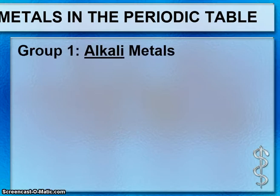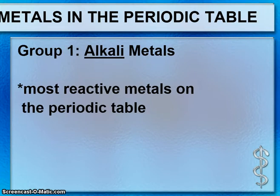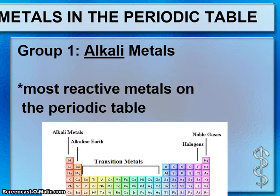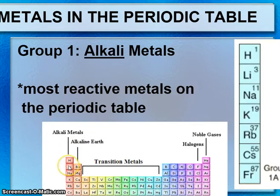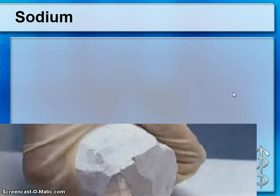Group 1 is the alkali metals — my favorite group. These are the most reactive metals on the periodic table. Hydrogen is not part of that group, but lithium, sodium, and all the way down to francium are included.